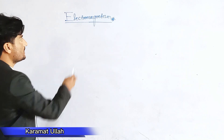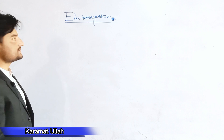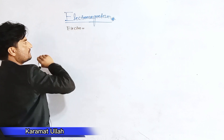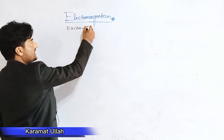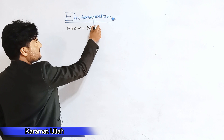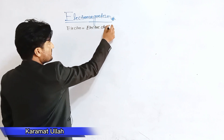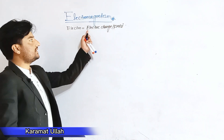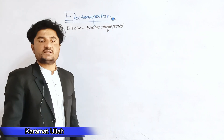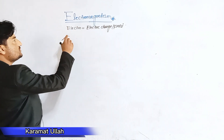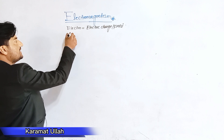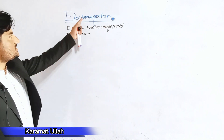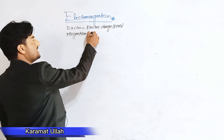Electromagnetism is a combination of two words. The first word is 'electro', which means electric charge or electric field. The second word is 'magnetism', which means magnetic field.